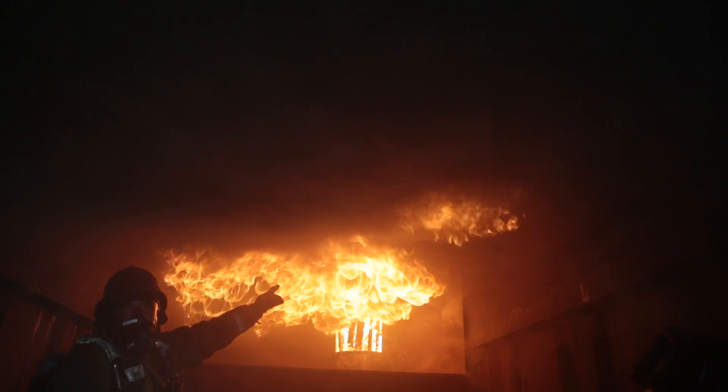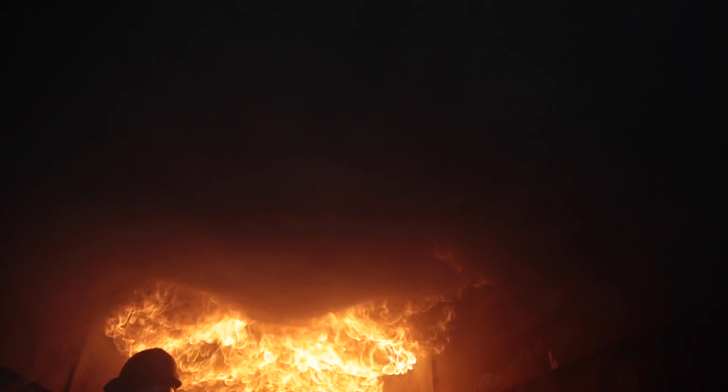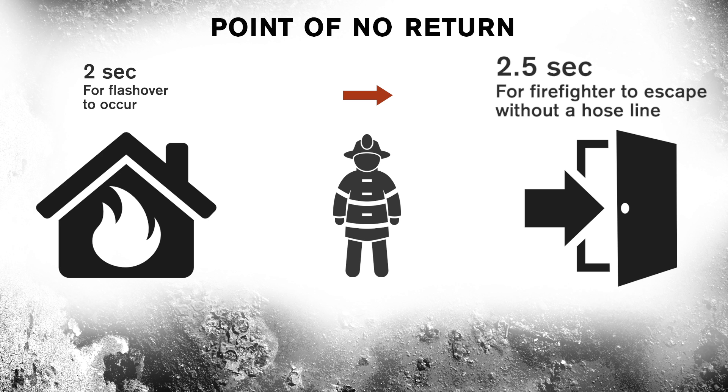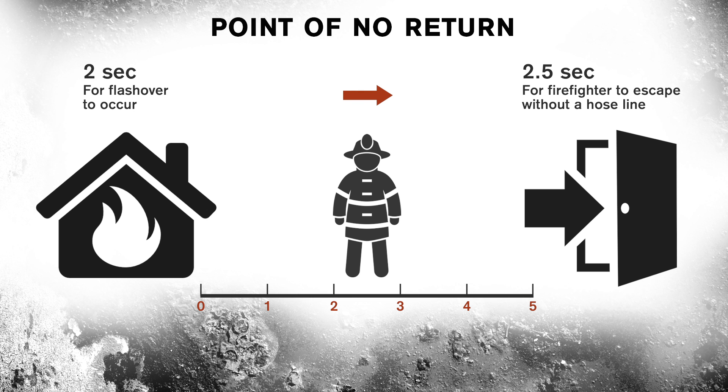That high-velocity, high-temperature smoke travels at about 15 miles an hour. As you get in and if you have to retreat, you can't crawl faster than 15 miles an hour, and that fire is going to find you before you find it. The NFPA says a firefighter can travel 2.5 feet per second without a hose line and has two seconds to escape if flashover occurs. That translates to: if you're more than five feet from an exit, you're not going to make it out.